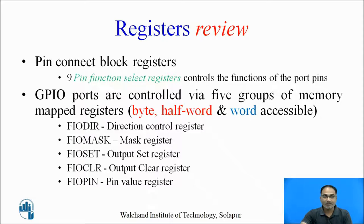Also, for GPIO, we may require the fast IO direction selection register, fast IO mask register, fast IO state register, fast IO clear register, and fast IO pin register. Let us design this small example.